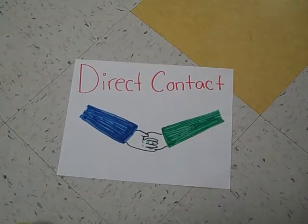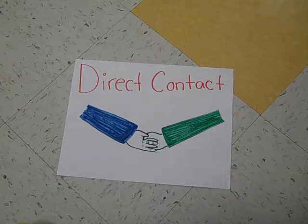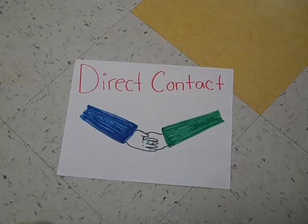Direct contact is when physical contact occurs between the infected and non-infected. A possible way a disease could be spread would be if someone that was infected touched someone else without the infection. An example of a direct contact disease is pink eye.